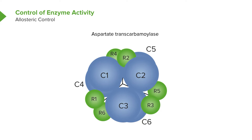The classic enzyme for studying allosteric control is aspartate transcarbamylase, which you can see on the screen. Aspartate transcarbamylase is also known as ATCase because it's easier to say. ATCase has a structure containing 12 proteins: six subunits that we call catalytic and six that we call regulatory, as we shall see.